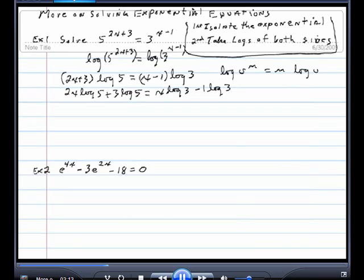Now notice there are only two terms with x and this is just a straight linear equation, so what I'm going to do is get all my x terms on one side and all my non-x terms on the other side.